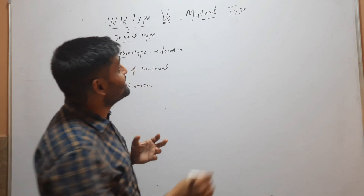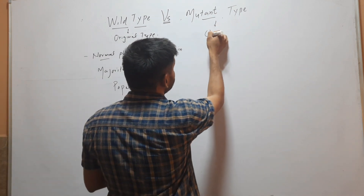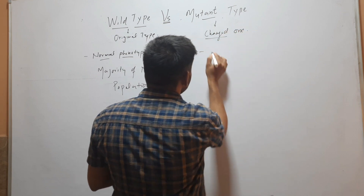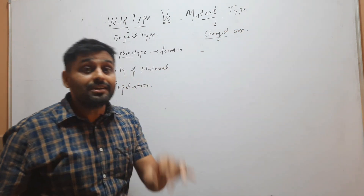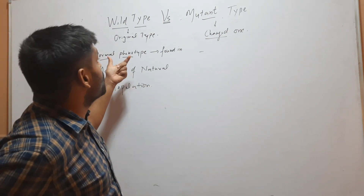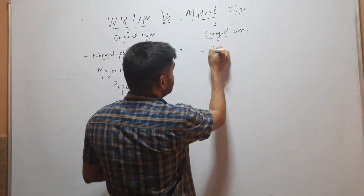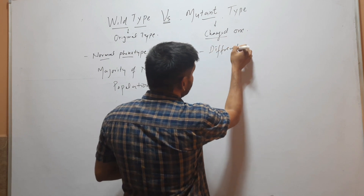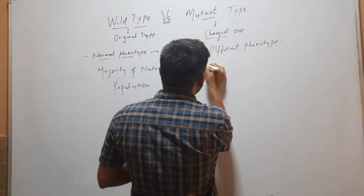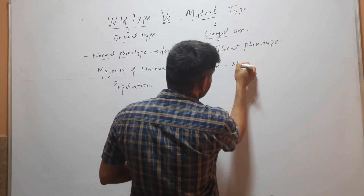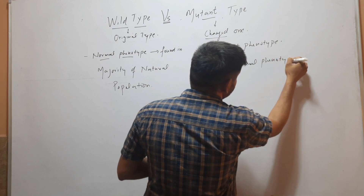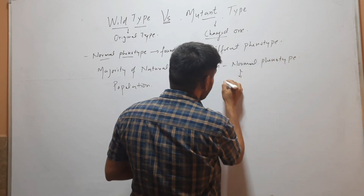Mutant type means a changed one — a different phenotype from this normal phenotype that is present in the population.